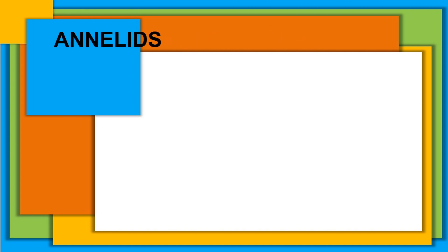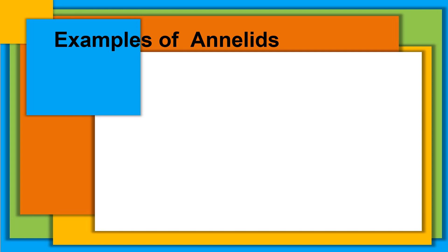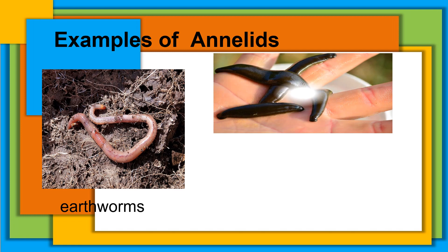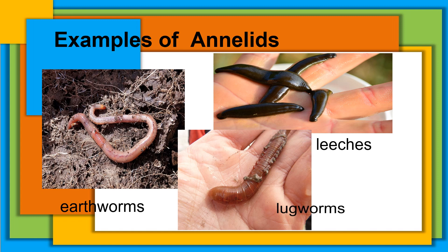Another group is called annelids. Annelids are elongated worm-like animals with external segmentation, ringed animals. Examples of annelids are earthworms, leeches, and lugworms.